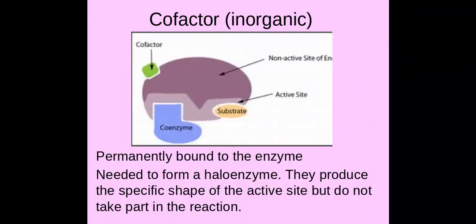The next one is a cofactor. A cofactor is inorganic. These are permanently bound to the enzyme, and they're needed to form the active holoenzyme — a holoenzyme is an active enzyme. They help to produce the specific shape of the active site, but they're not actively involved in the reaction itself. So although they help to form the complementary and specific active site shape, the cofactor is not actually involved in the reaction at all.